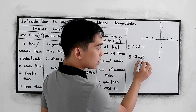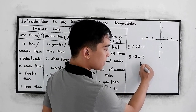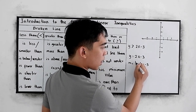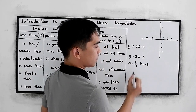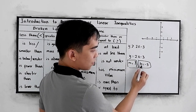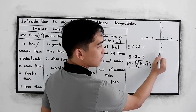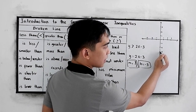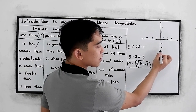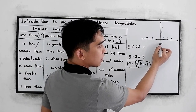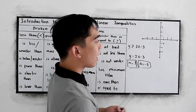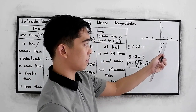So this is our b, negative 3, and m, 2 over 1. Plot negative 3 on the y-axis. Then rise 2, run 1 going right. Connect the points.